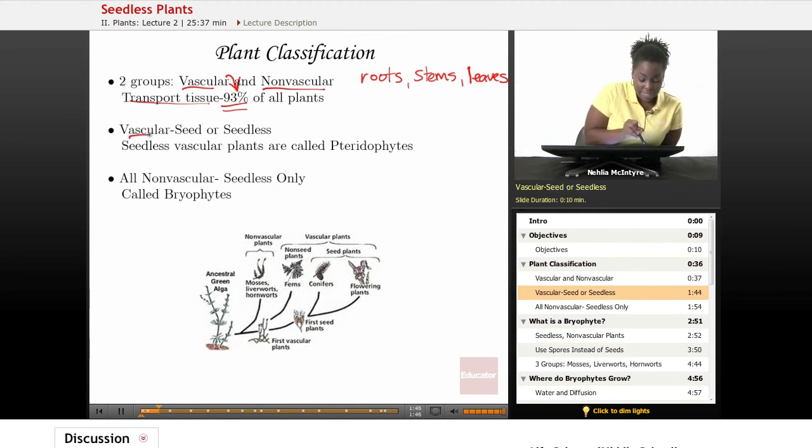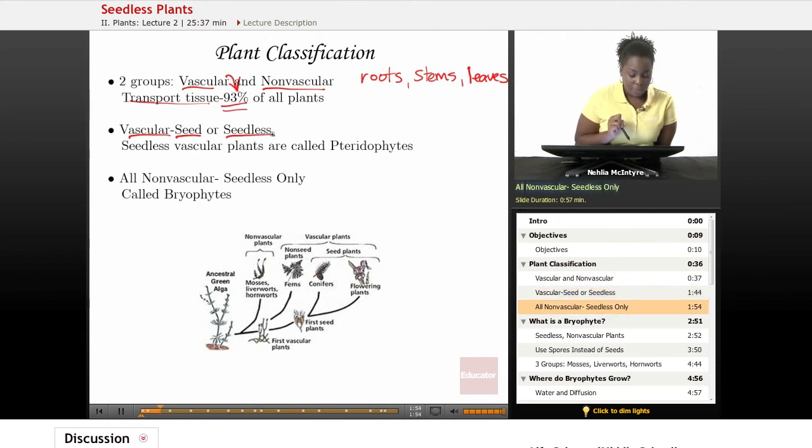Vascular plants can have seeds or they can be seedless plants. Nonvascular plants, however, never have seeds, so they're seedless only plants. Vascular seedless plants have a special name and they're called pteridophytes, and we'll talk about those later. And nonvascular plants are called bryophytes, and we'll discuss those also.